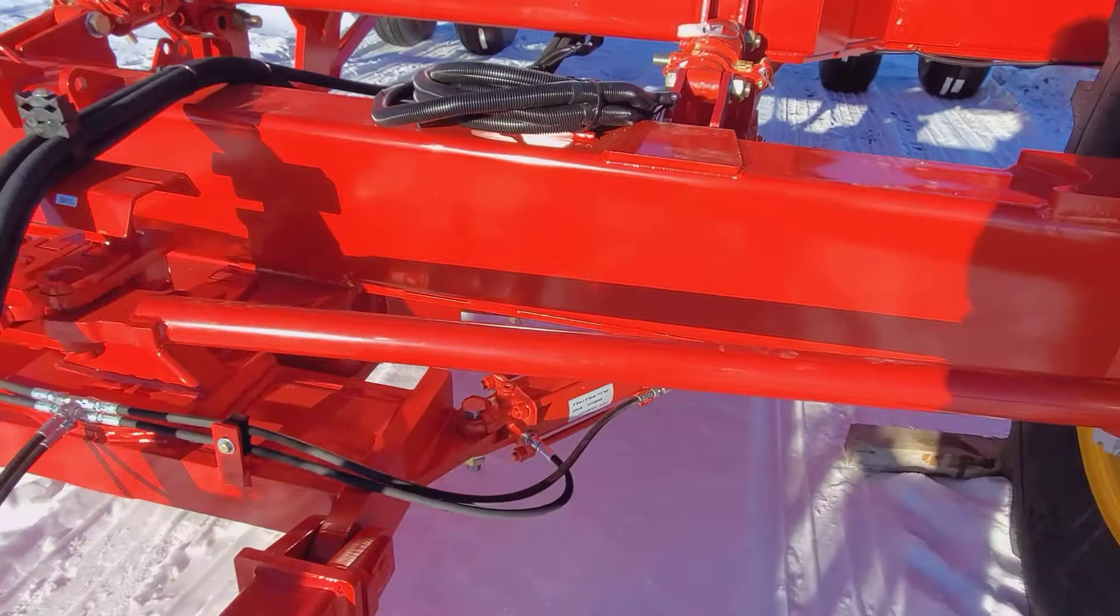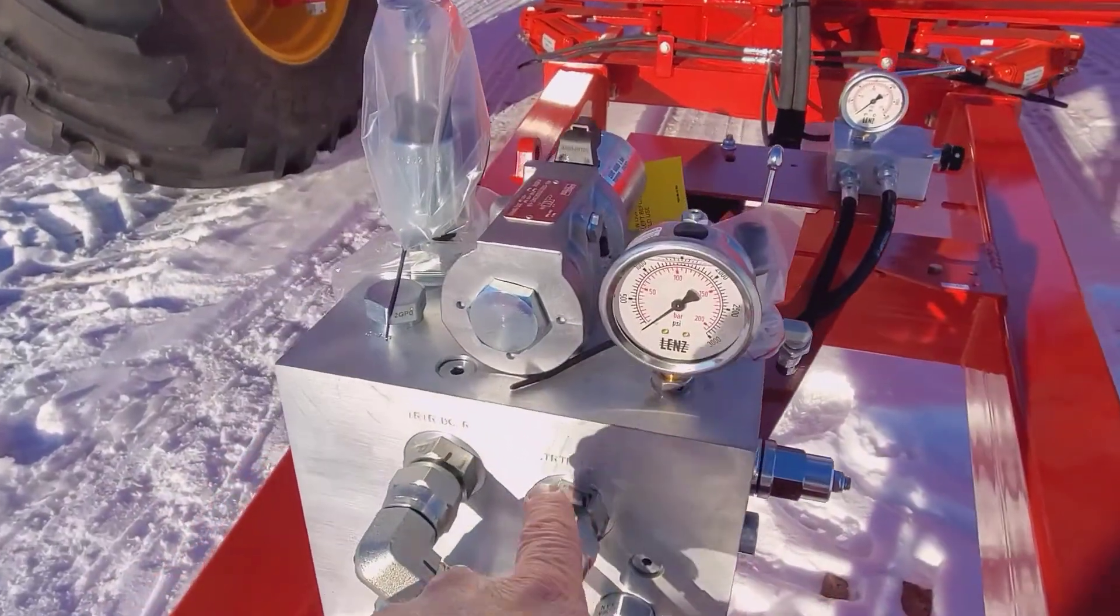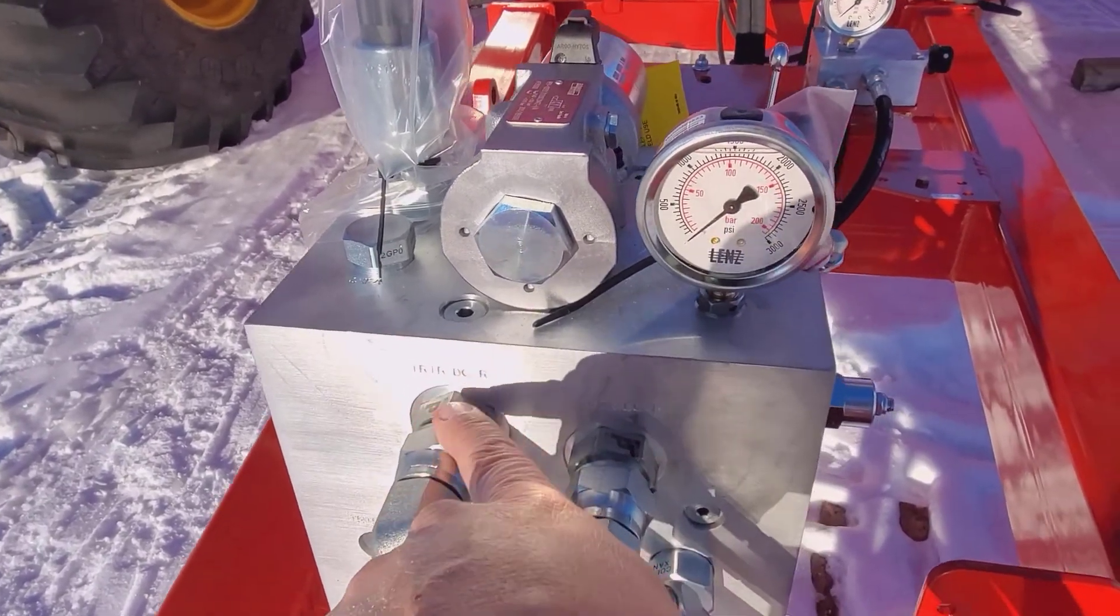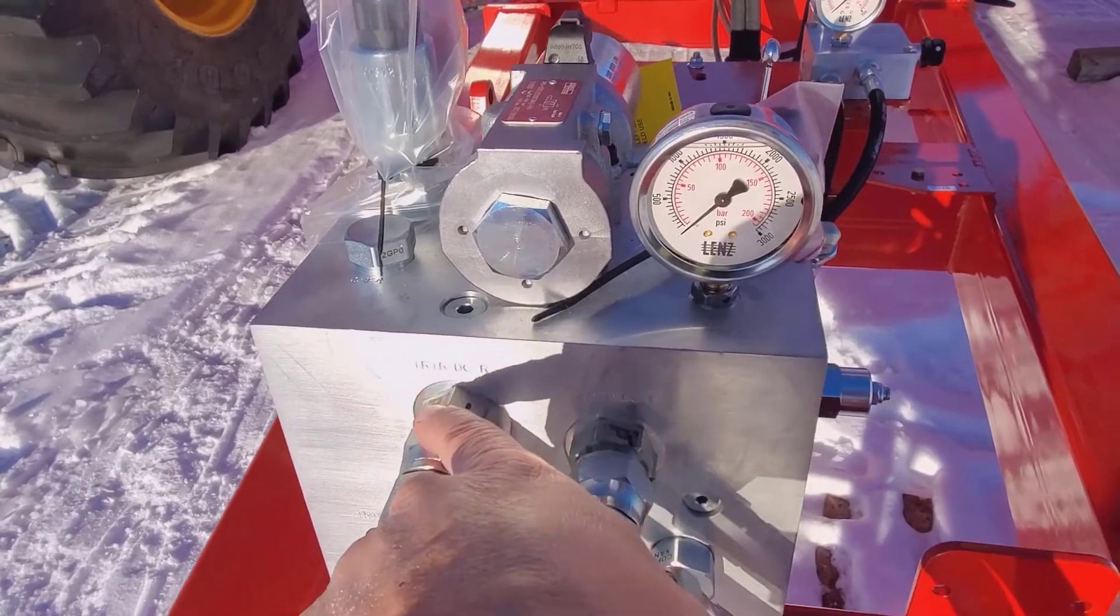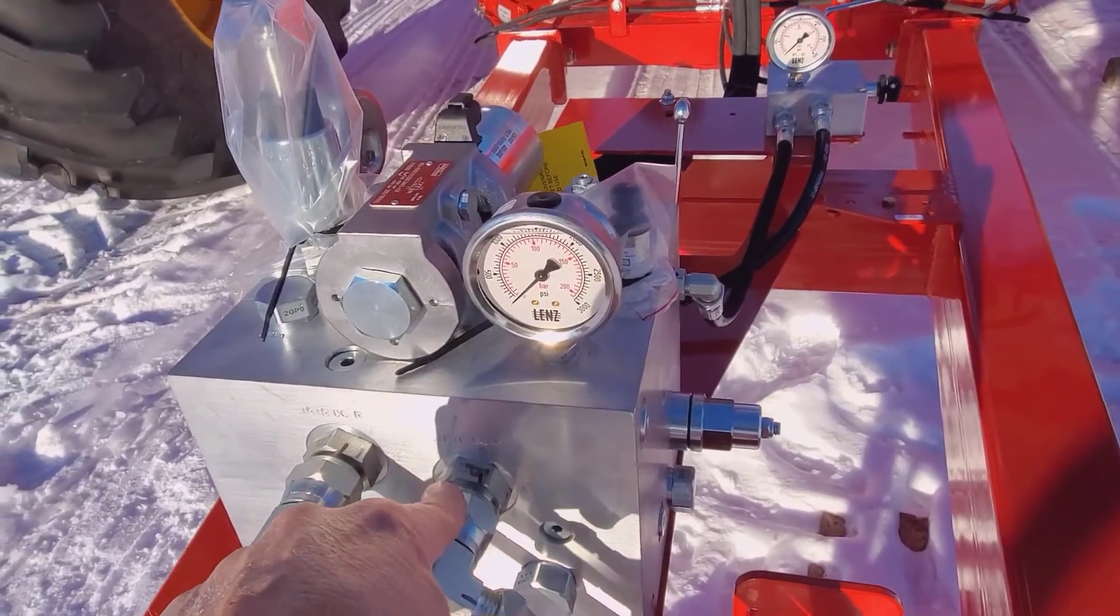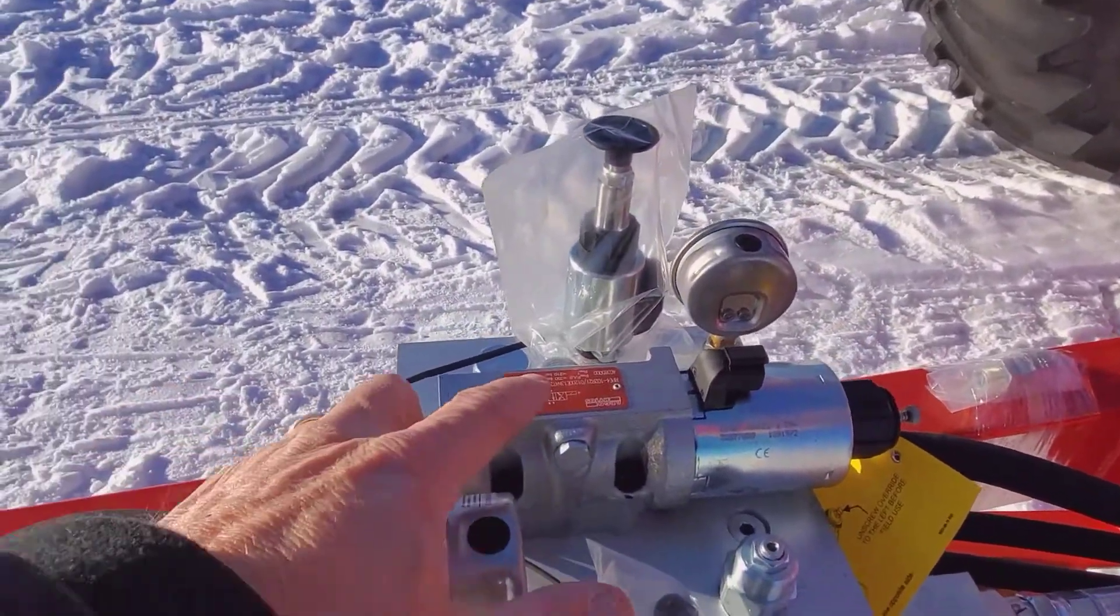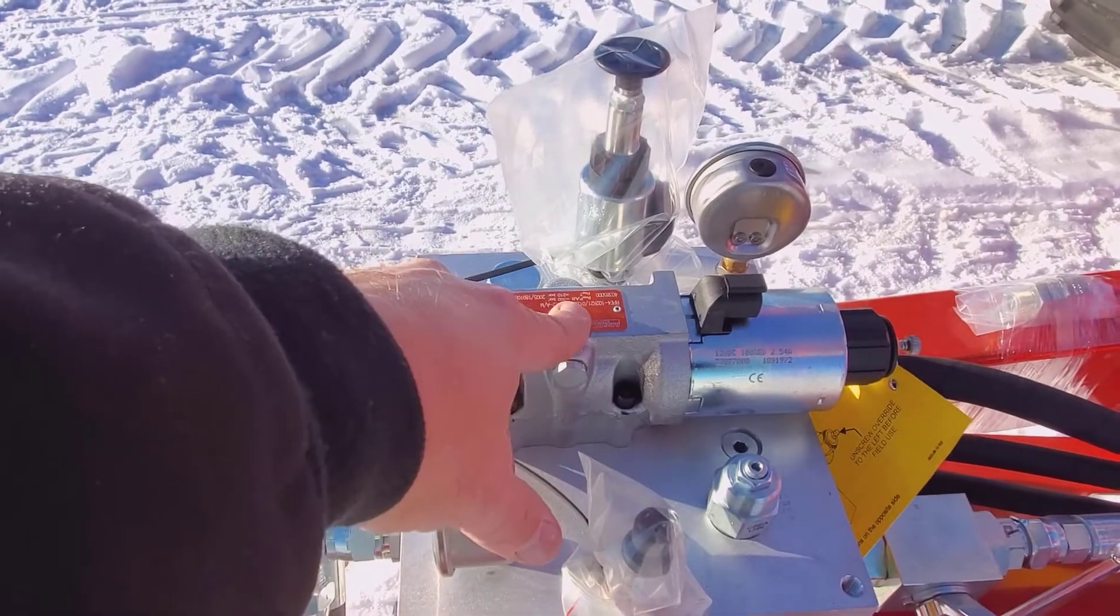How do we do so? We have our depth circuit engaged, our DCR, our DCP, sorry, and our DCR, pressure and return, always in the proper direction. Then our direction control valve controls whether the openers are raising or lowering.